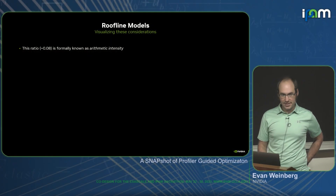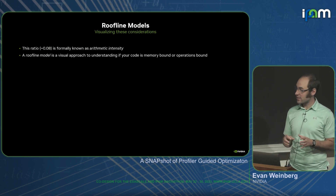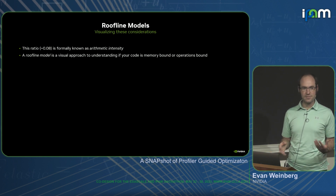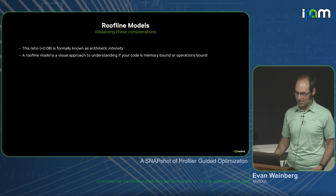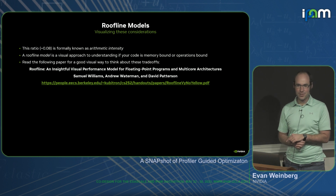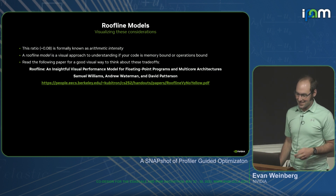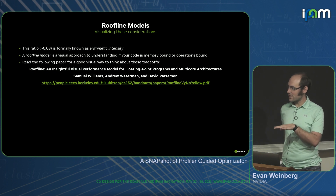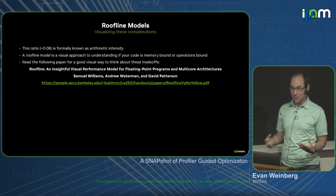This ratio — flops per byte — is formally known as the arithmetic intensity. There's a nice visual way to talk about it called the roofline model that will help tell you if your code is memory bound or compute bound. This will vary depending on your architecture. There's a really important paper that talks about drawing roofline plots and how to use them to target optimization — it's required reading for performance analysis.